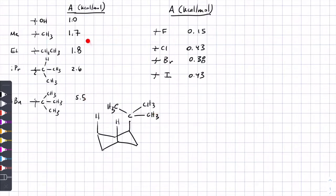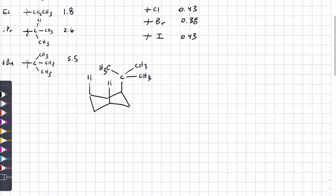This is useful as a rule of thumb for organic chemistry about size, sterics, and how easy it is to get close to a group. T-butyl is very large, isopropyl is less large, ethyl is even less, and methyl is even less.